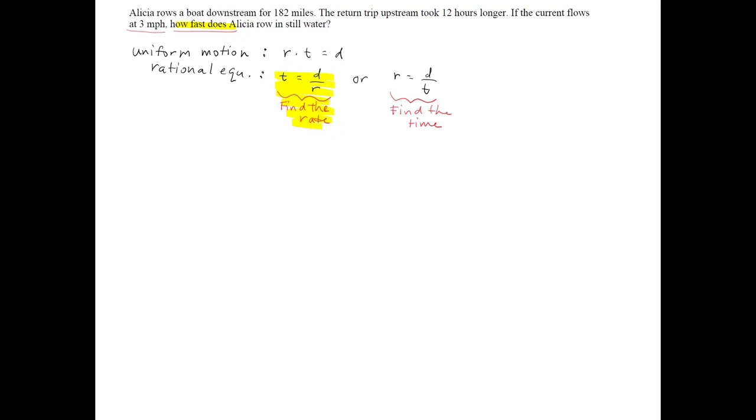Let's go ahead and set up a table. Rate, time, distance. And here we have two situations. The boat going downstream. Downstream means that the boat went faster. Upstream, meaning the boat went slower.